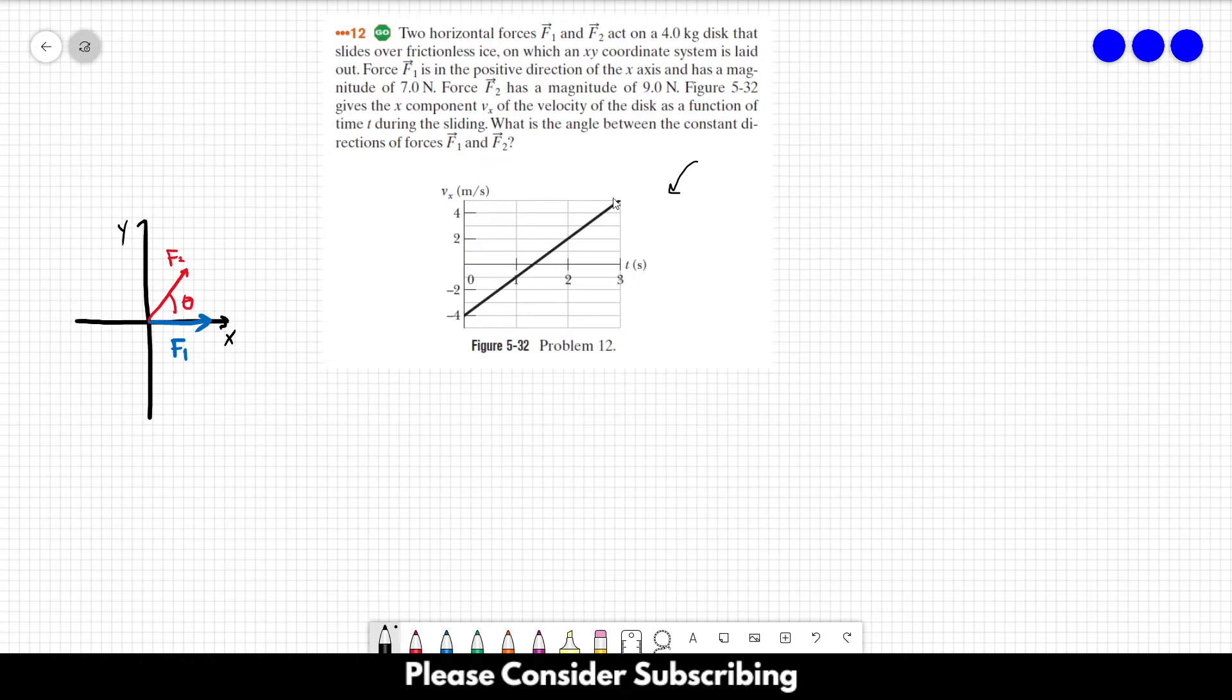Let's look to this graph. We have the velocity in the x direction in function of time, and we can notice that this is a straight line. So the velocity is a first degree equation, which means the acceleration is constant at least in the x direction.